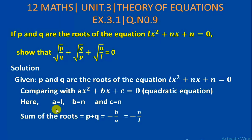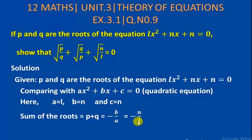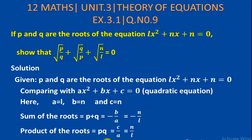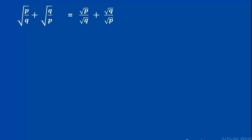Sum of the roots: p + q = -b/a = -n/l. Product of the roots: p × q = c/a = n/l.